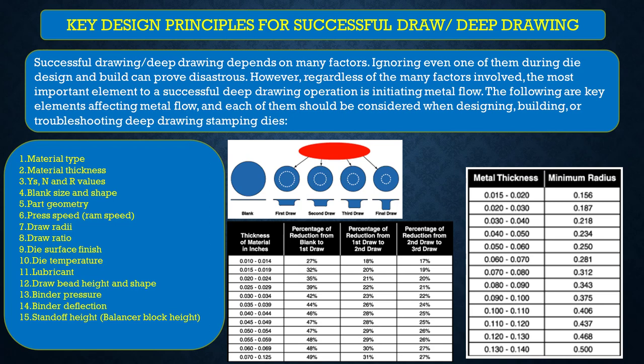There are 15 major points to be sure of while designing. Number one: material type — whether it is CR sheet, HR sheet, coated or uncoated. Number two: material thickness. Number three: yield strength, n-value, and r-value. Number four: blank size and shape. Number five: part geometry. Number six: press speed, that is strokes per minute (SPM). Number seven: draw radii — draw radii play a significant role when forming components.